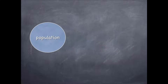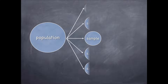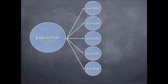Assume you have a population that you're taking samples from. You can go out and grab many, many samples from this population. Looking at one sample at a time, from within each sample, we can calculate a sample statistic. If the data you're collecting on the sampled individuals is numerical, this sample statistic might be a sample mean. For example, if you're asking each sampled individual their age, we might calculate the average age and call that our sample mean, our sample statistic.